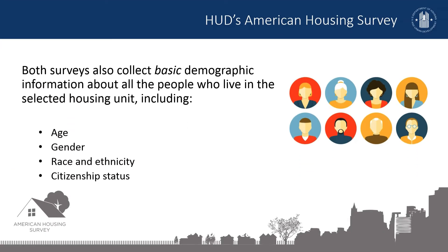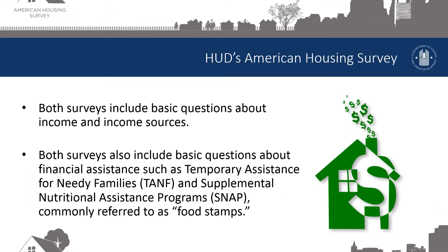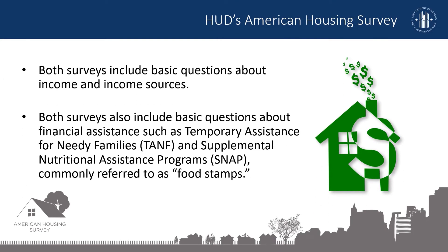Both surveys also collect basic demographic information about all the people who live in the selected housing unit, including age, gender, race and ethnicity, and citizenship status. And both surveys collect demographic information such as educational attainment, marital status, disability status, and year the householder moved into the housing unit. Both surveys include basic questions about income and income sources, as well as basic questions about financial assistance, such as temporary assistance for needy families, or TANF, and supplemental nutritional assistance programs, or SNAP, commonly referred to as food stamps.